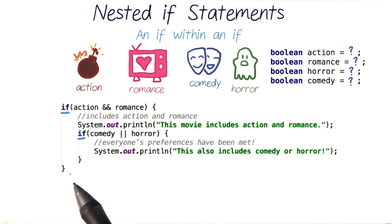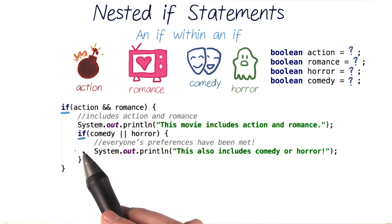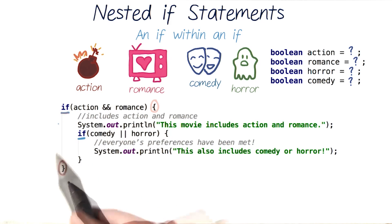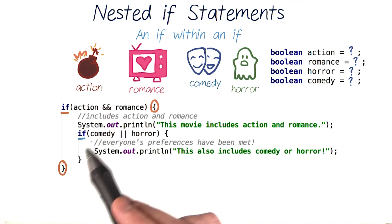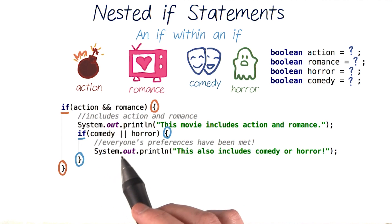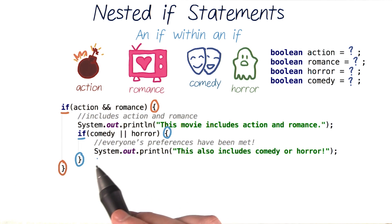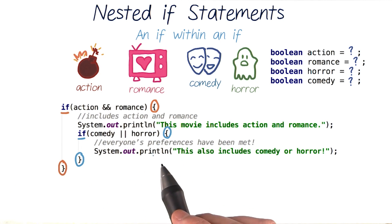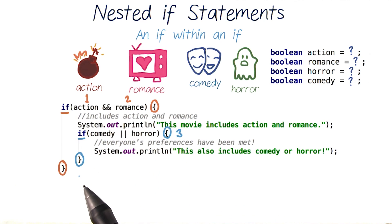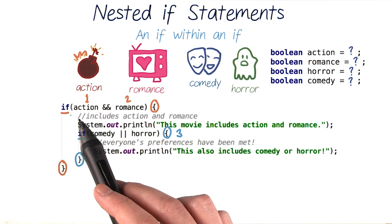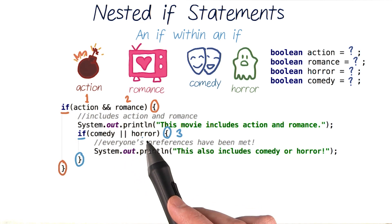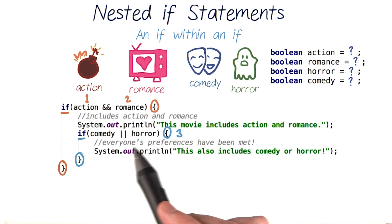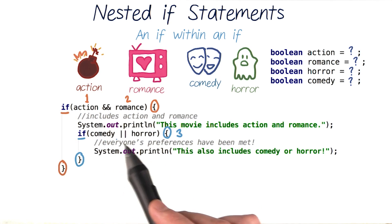Our long if statement can be written instead as an if within another if. The outer if has its curly braces surrounding the inner if, and the nested if only contains its block of code inside its own curly braces — performing the same checks as before. The outer if checks if a movie includes action and romance, and the inner if checks our third preference, whether there's comedy or horror.